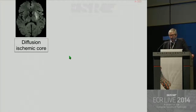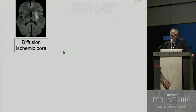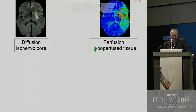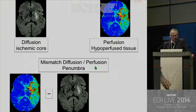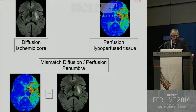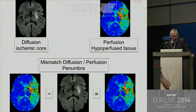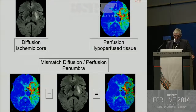How to evaluate this penumbra? You can use the diffusion-perfusion mismatch. Diffusion is supposed to show the ischemic core, and perfusion will show you the hypoperfused tissue, and by using the mismatch you will obtain the penumbra. Here you have the perfusion imaging — you see this hypoperfused area — and the diffusion lesion, which is relatively limited, and by using this diffusion-perfusion mismatch you detect the penumbra.